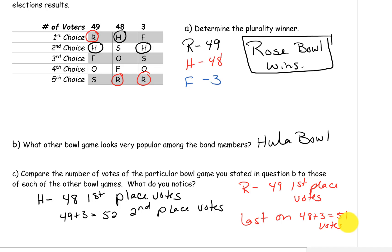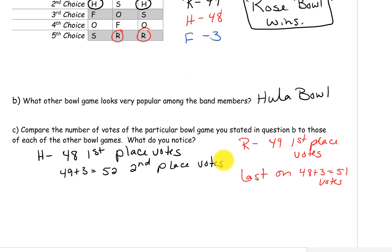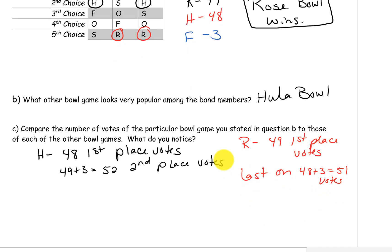But the Hula Bowl, which did not win, was first place on 48 of the ballots and had 52 second place votes. So it looks like really the Hula Bowl was preferred more than the Rose Bowl, even though the Rose Bowl won the election. That's it for this video — let me know if you have any questions and I hope you're having a great day.